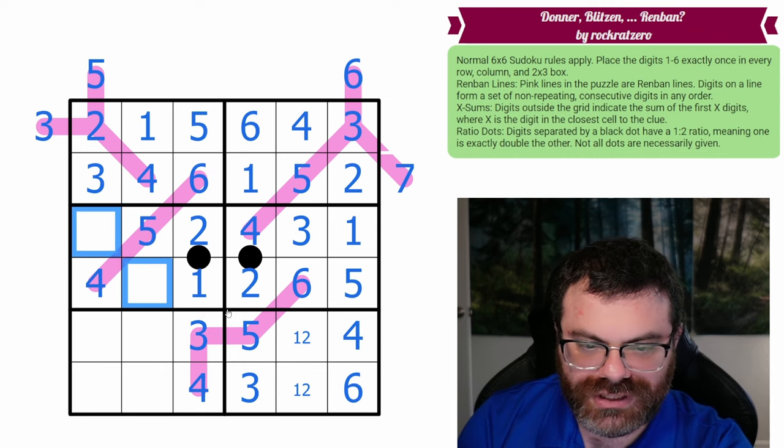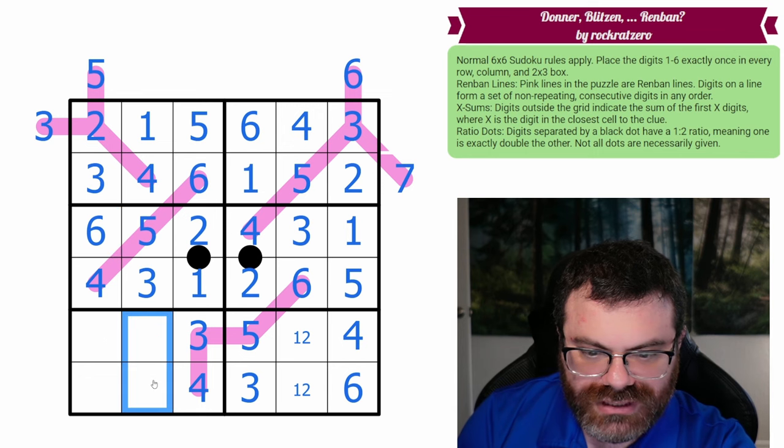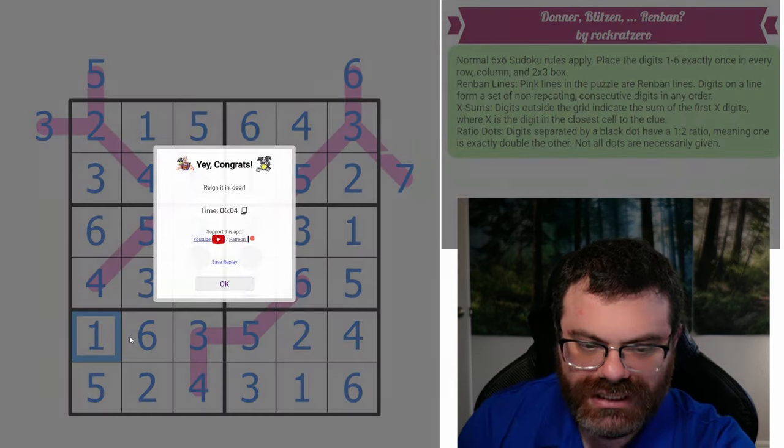Oh, 6 gives us 5, 4. Should have done that a while ago. This is 3, 6, which we know the order of. Okay, these are pairs. We need 2 and 6 here. We know the order. Then we need 1 and 5 here. And we're done. Nice.